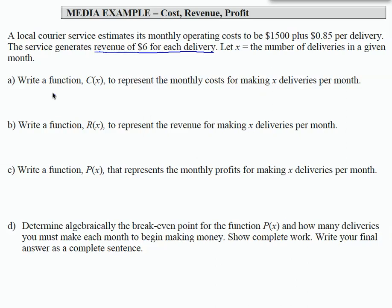C of X is our cost function where our output is the cost of making our deliveries and the input is the number of deliveries in a given month. Well, the first sentence gives us an idea - monthly operating costs.